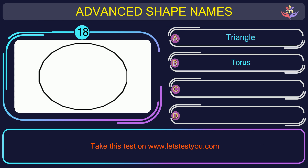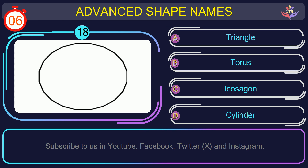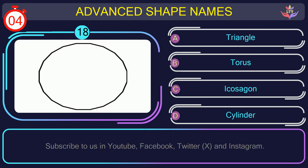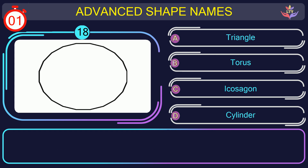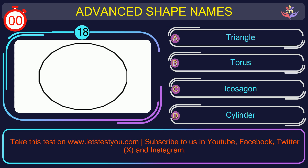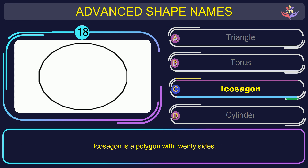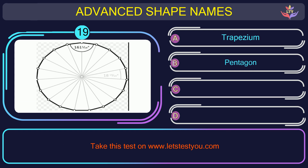Question number eighteen. Can you name the shape you see in this picture? The correct answer is option C. Icosagon. Icosagon is a polygon with 20 sides.